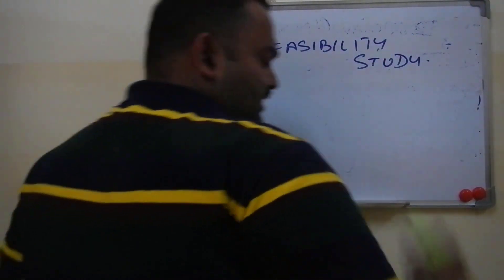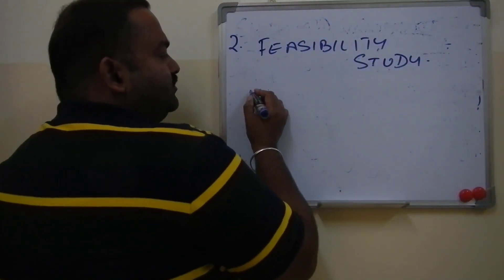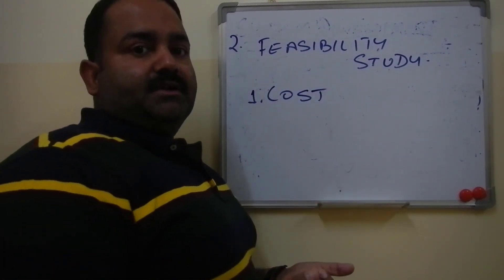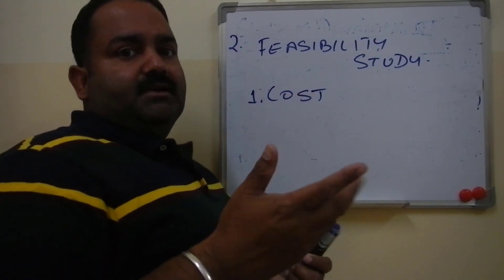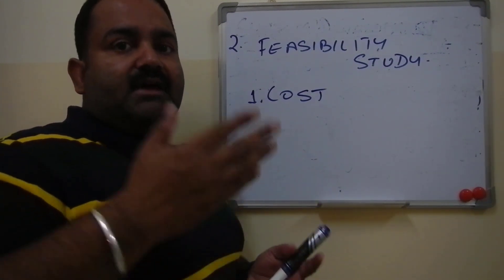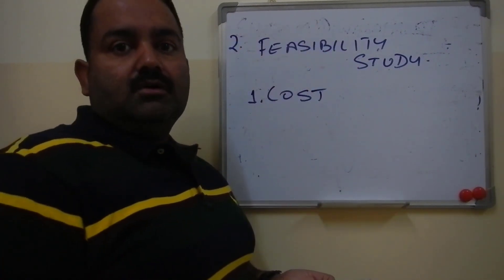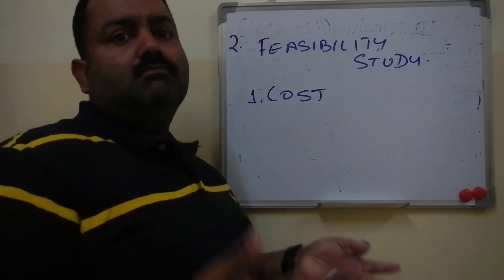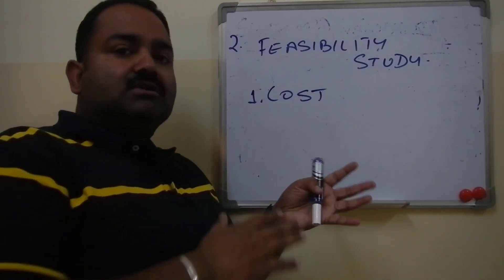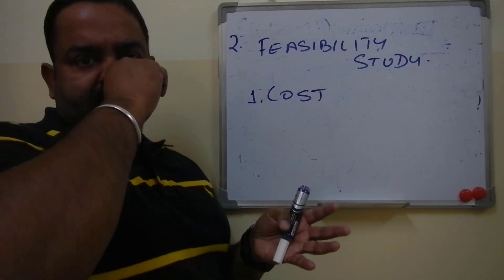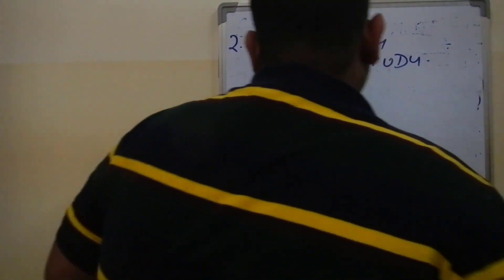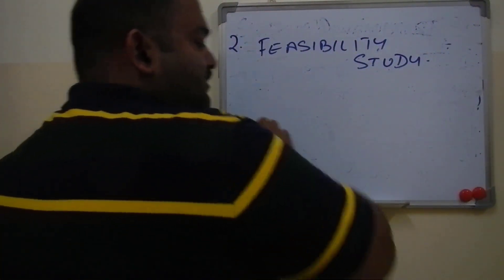The first feasibility is related to cost — we call it Economic Feasibility. In this, we answer: do we have enough money to build a new system? You can only build a system if you have money. For cost feasibility, you plan your budget, and if you have enough funds, you proceed to study the second type of feasibility.